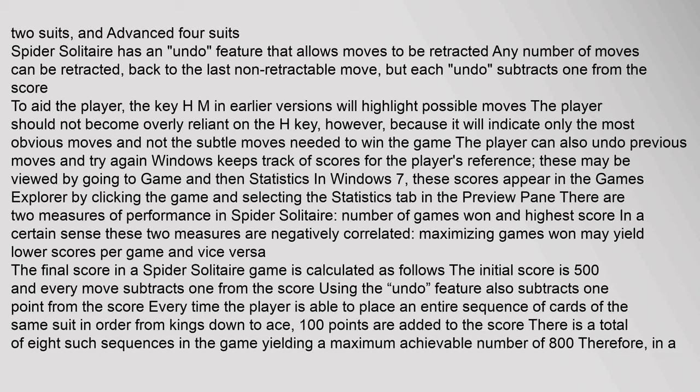Each of the 10 cards in this draw lands face up on each of the 10 horizontal columns, and the player then proceeds to place these in such a way to create a sequence of cards all in one suit. There are three levels of difficulty in Spider Solitaire: Beginner (1 suit), Intermediate (2 suits), and Advanced (4 suits). Spider Solitaire has an undo feature that allows moves to be retracted. Any number of moves can be retracted back to the last non-retractable move, but each undo subtracts 1 from the score.